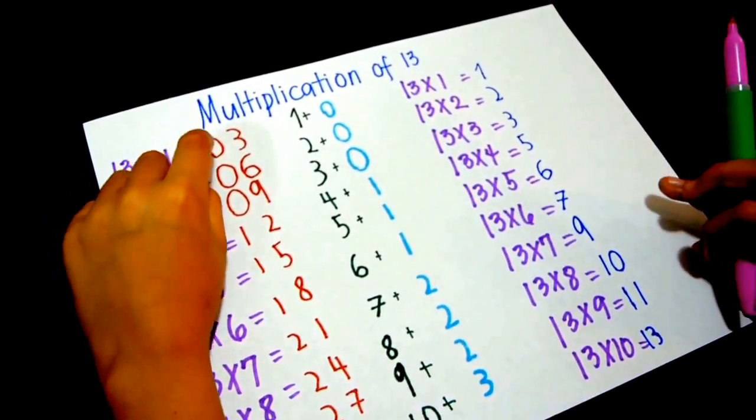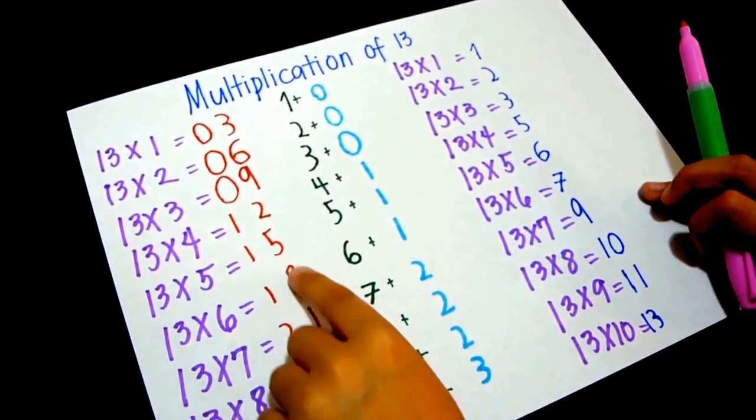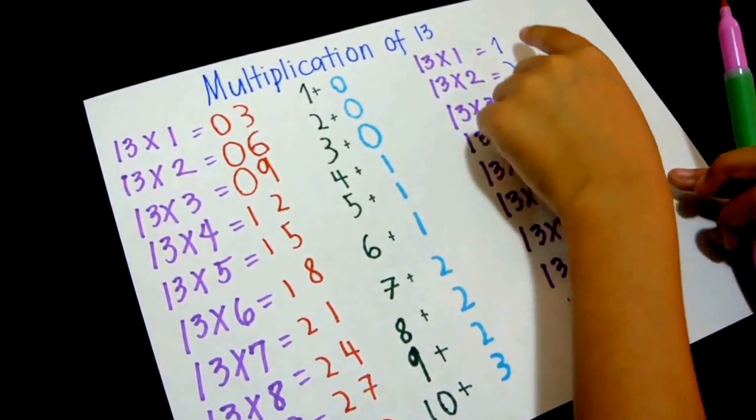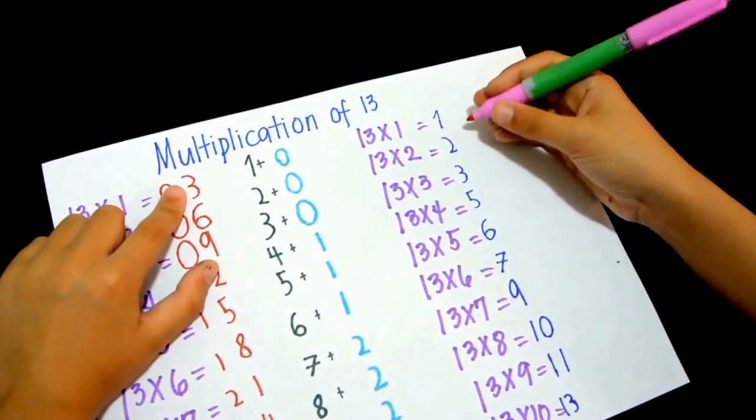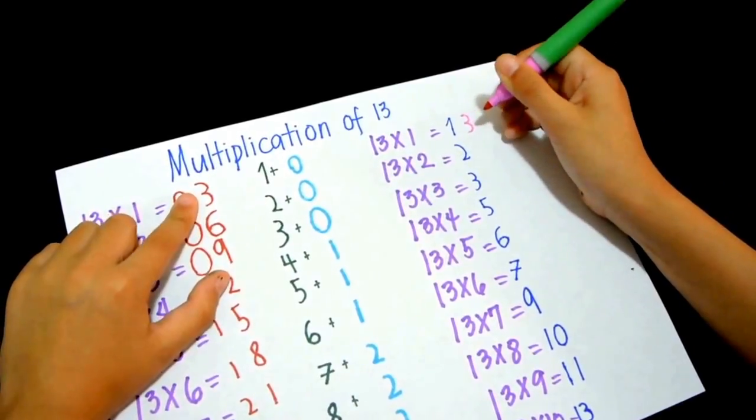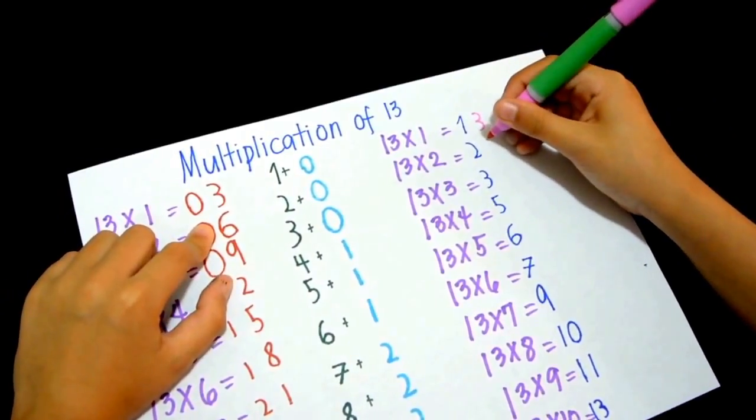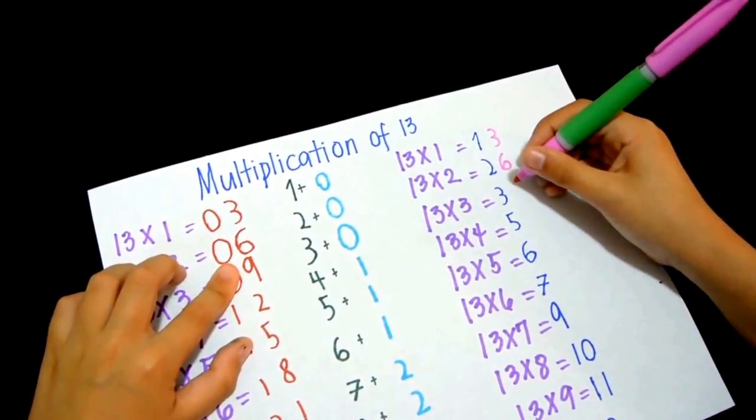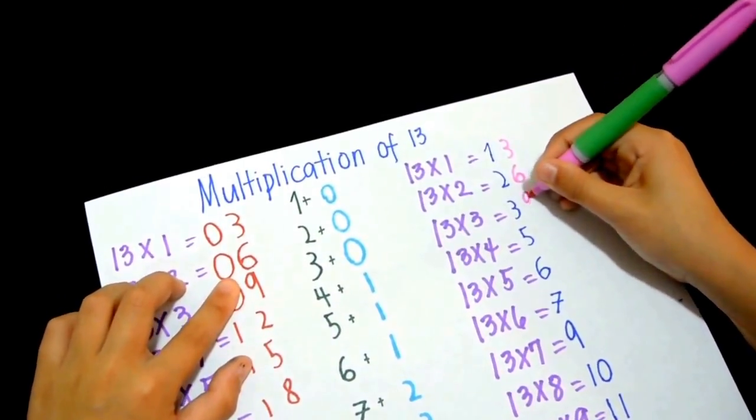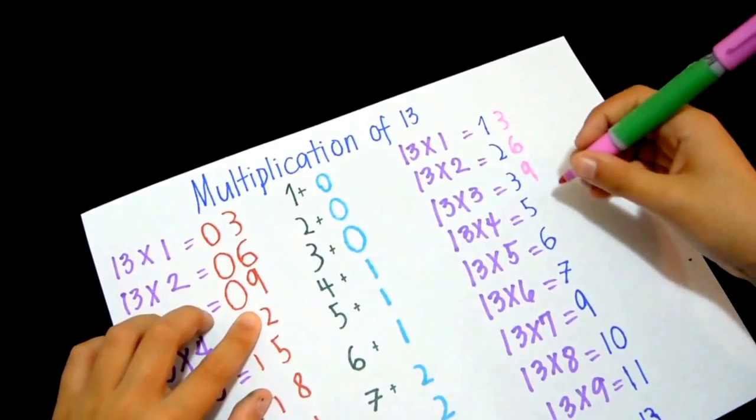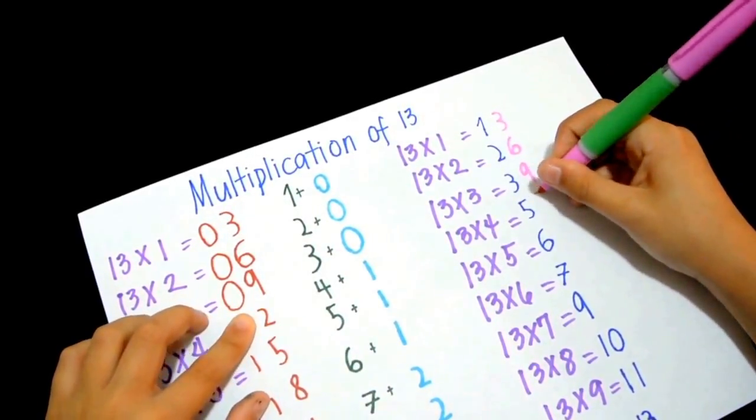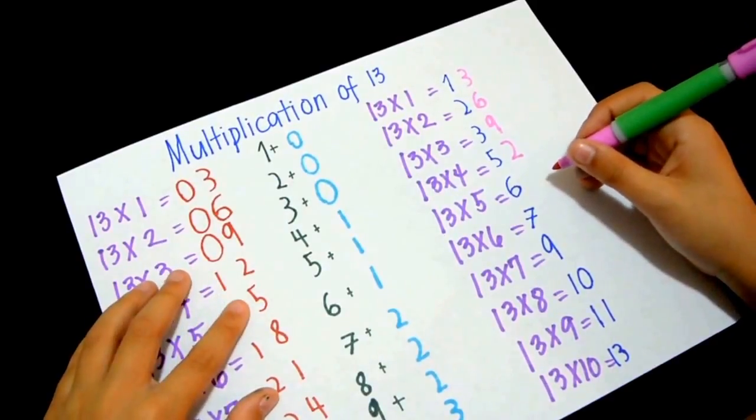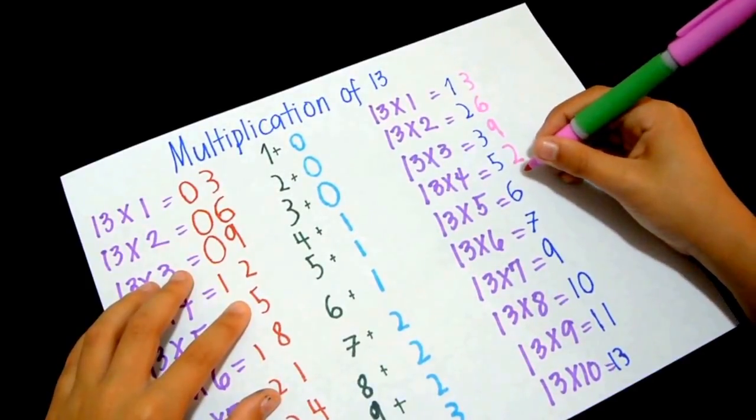Now, let's transfer this numbers over here. 3 goes over here, 6 here, 9 all the way to the other side, 2 goes next to this 5, this 5 goes next to the 6.